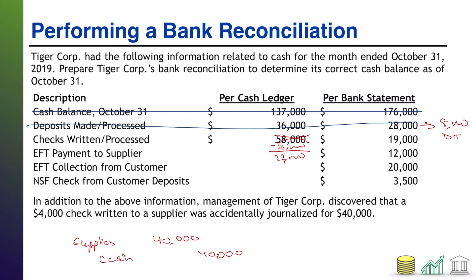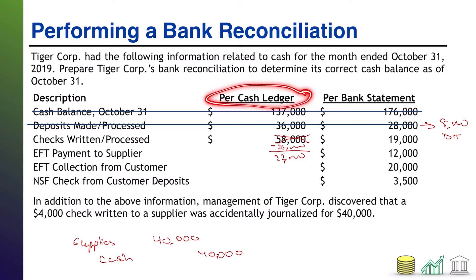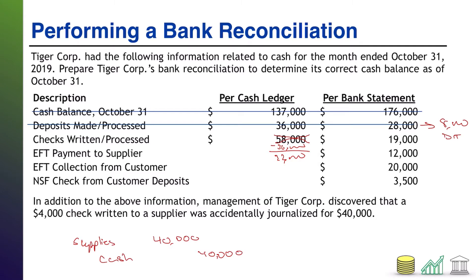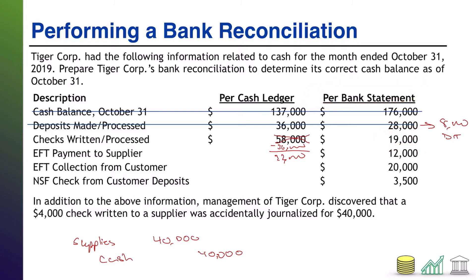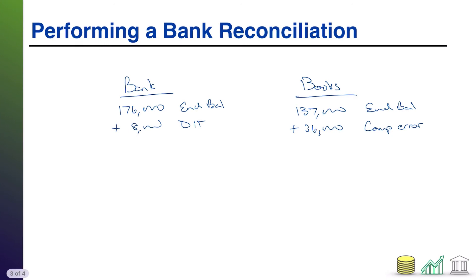Next up: checks written in process. According to the cash ledger we have $22,000 in checks written — the true number after fixing the mistake. According to the bank statement, only $19,000 in checks written. The company knows what it wrote; the bank just may not have processed it all yet. This leads to $3,000 worth of outstanding checks — checks we wrote that the bank hasn't yet factored into their balance. Checks reduce cash, so we subtract $3,000 on the bank side.